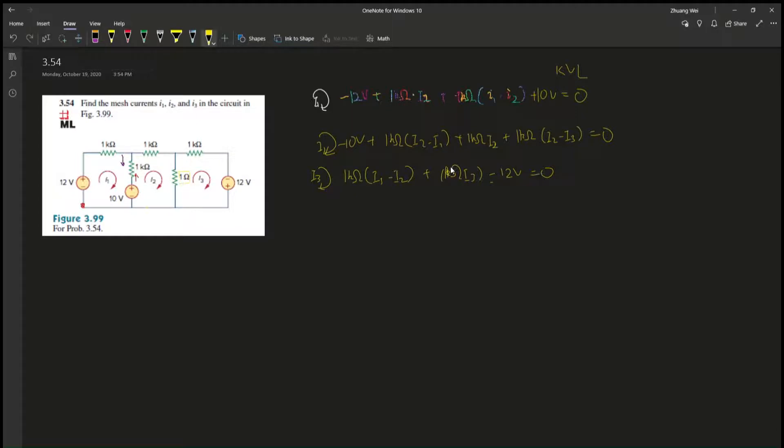So we have three unknowns and three equations. It's just pure math now, but I can simplify this for you guys. So this is i1, right? So 1k i1 plus another 1k ohm i1, so that's 2k ohm i1, and then minus 1k i2 equals negative 2V. Plus 10 minus 12 is negative 2V, right?